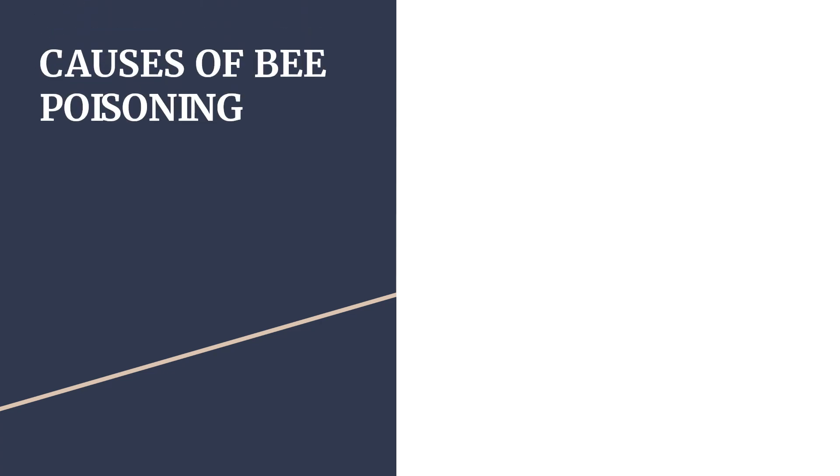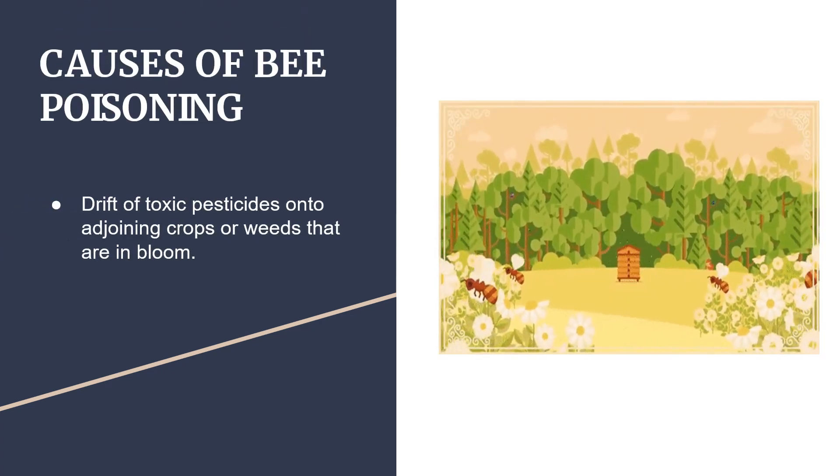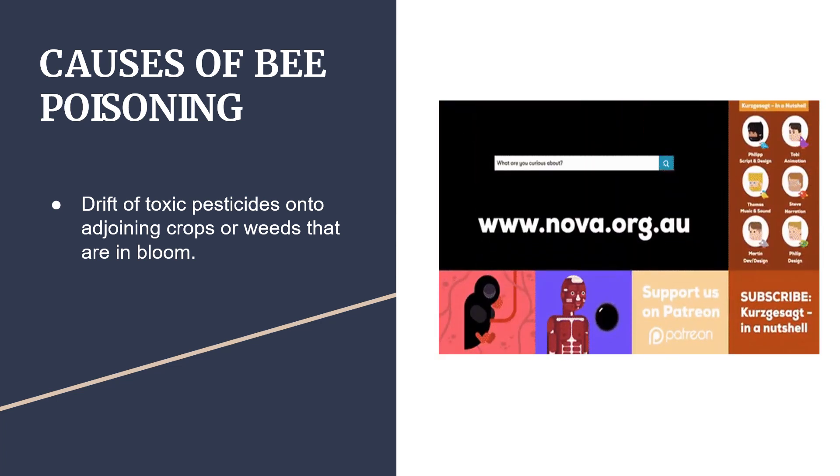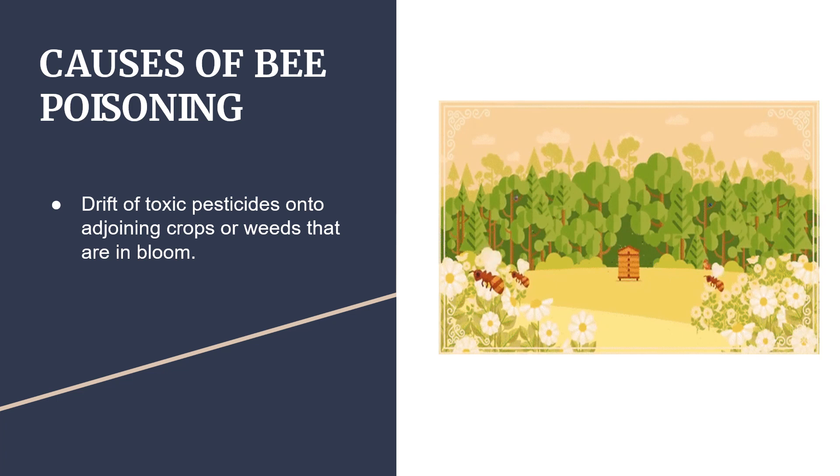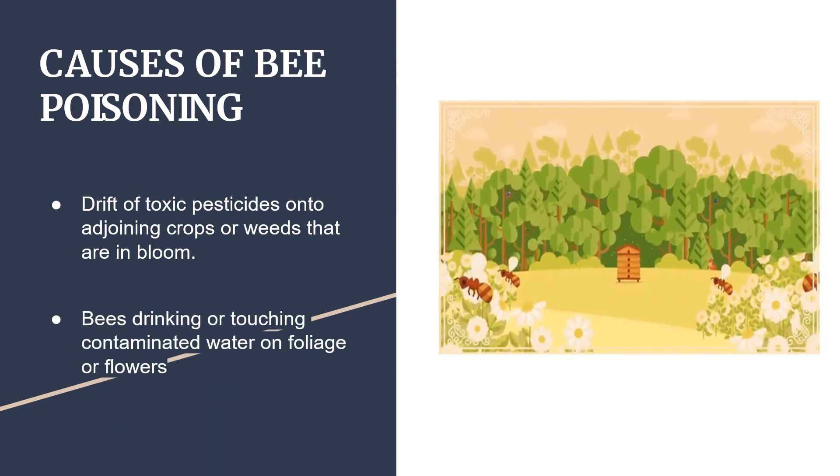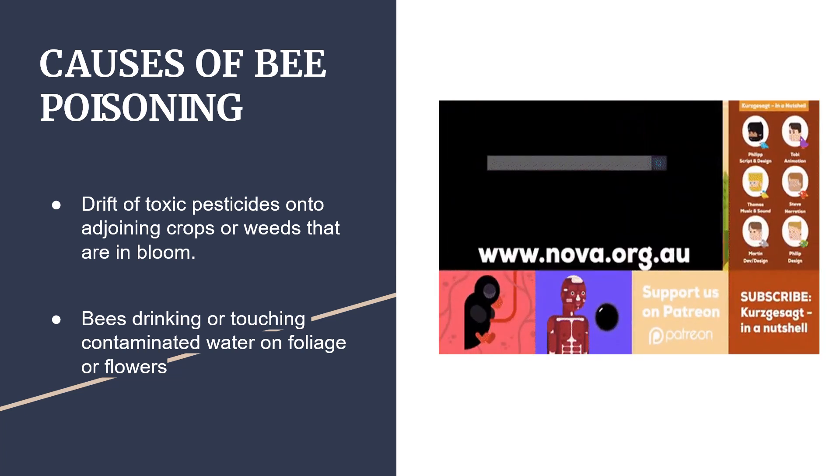Cause of Bee Poisoning: Drift of toxic pesticides onto adjoining crops or weeds that are in bloom. Bees drinking or touching contaminated water on foliage or flowers.